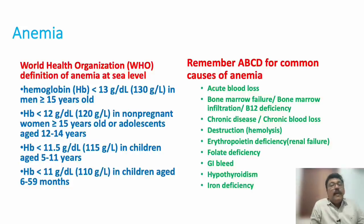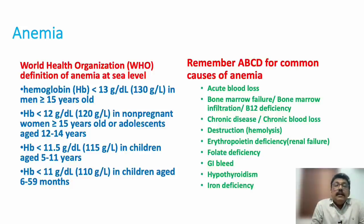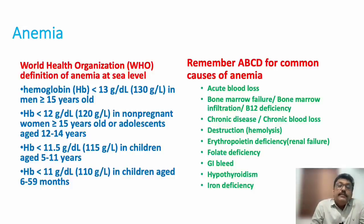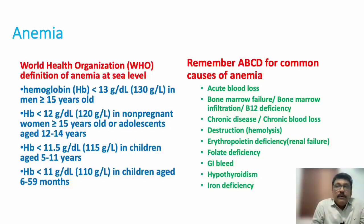Common causes of anemia can be remembered A through I. 'A' is acute blood loss — trauma, GI blood loss, menstrual blood loss. 'B' is bone marrow failure or infiltration — myelodysplastic syndrome, aplastic anemia, leukemias. 'C' is B12, folic acid, and iron deficiency, which impair bone marrow production. 'D' is chronic diseases causing anemia through bone marrow suppression by inflammatory cells.